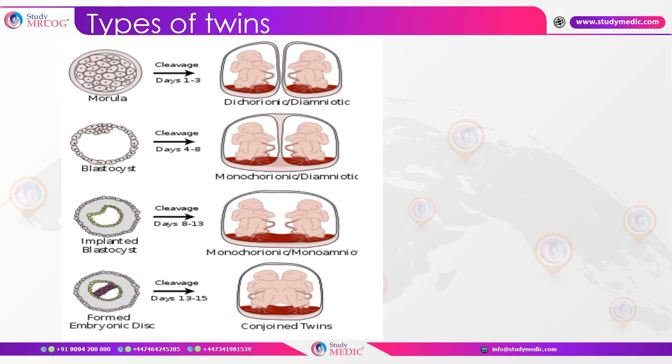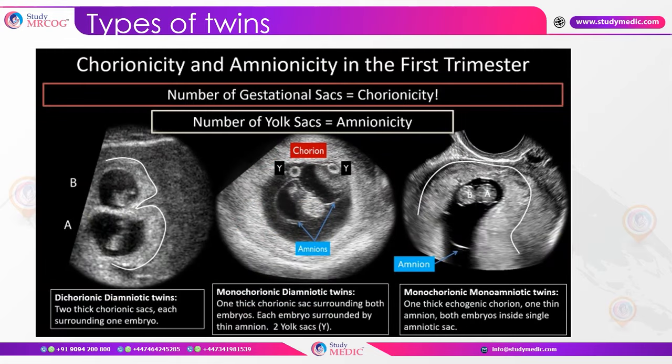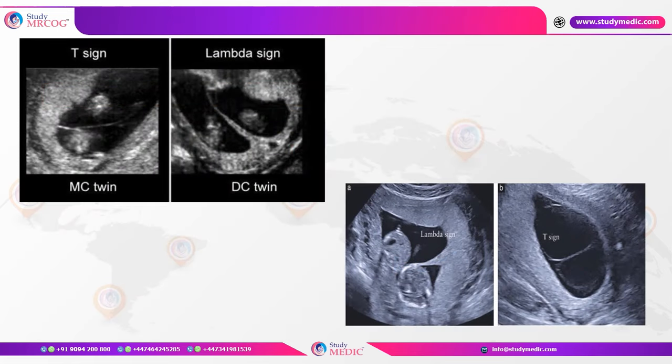If cleavage occurs between days 8 to 13 in the implanted blastocyst stage, both chorion and amnion are shared, resulting in MCMA twins. If cleavage occurs between days 13 to 15, conjoint twins result. On ultrasound, DCDA twins show two thick chorionic sacs; MCDA shows one thick chorionic sac surrounding both embryos, each with its own thin amnion; and MCMA twins have one thick echogenic chorion and one thin amnion with both embryos inside a single amniotic sac.